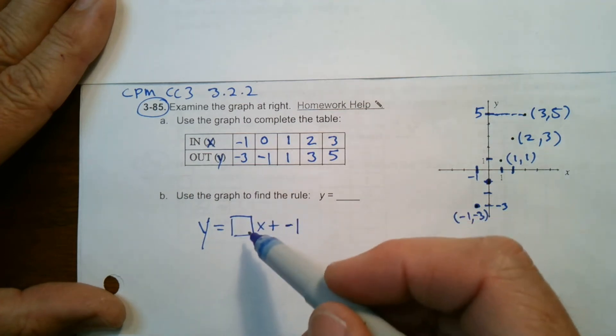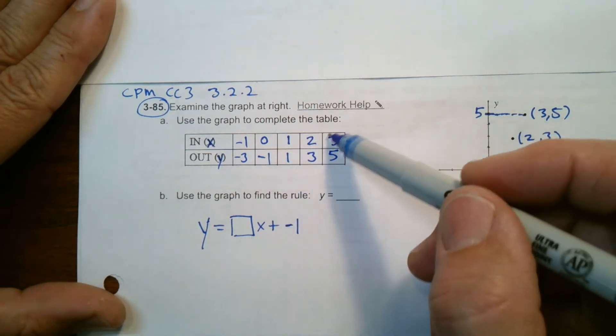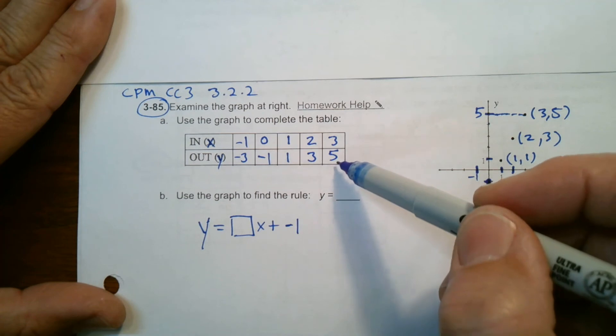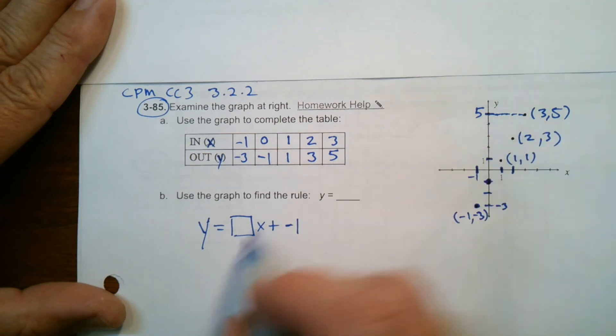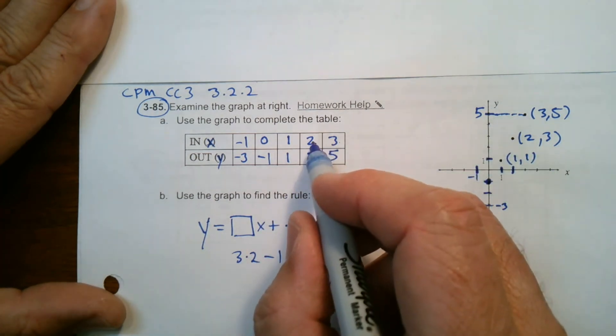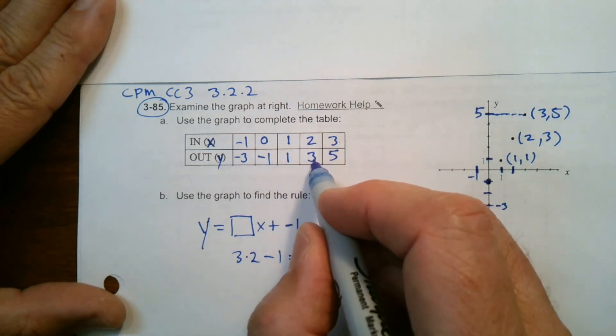So then what would I do? What's the multiplier? So let's start with this 3. 3 times what minus 1 is 5? Well, 3 times 2 minus 1 is equal to 5. So maybe it's a 2 because that's the 3 there. So 2 times 2 is 4 minus 1 is 3. That's true.